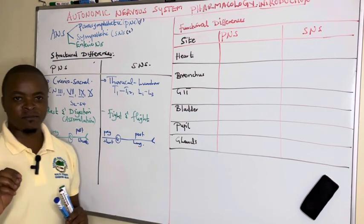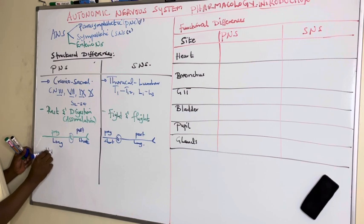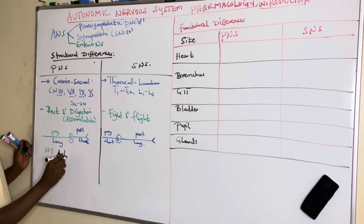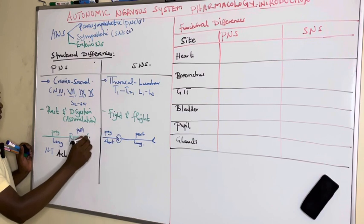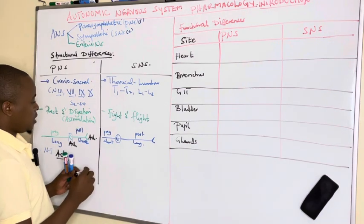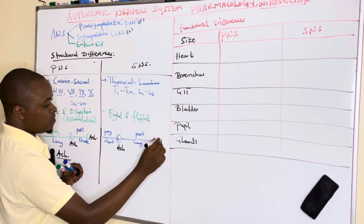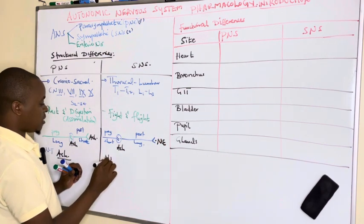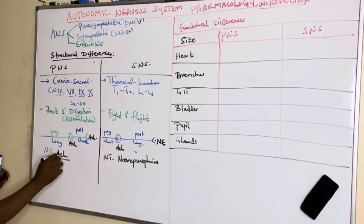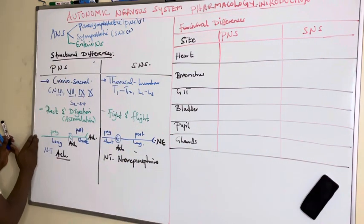Regarding neurotransmitters, in the parasympathetic nervous system, the neurotransmitter is acetylcholine — both at the ganglion and at the effector or nerve terminal. In the sympathetic nervous system, acetylcholine is used at the preganglionic synapse, but at the effector the major neurotransmitter is norepinephrine.